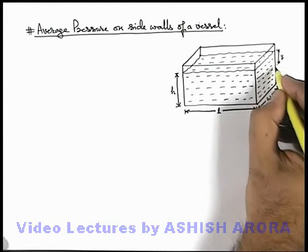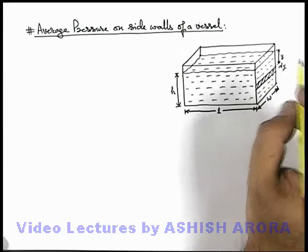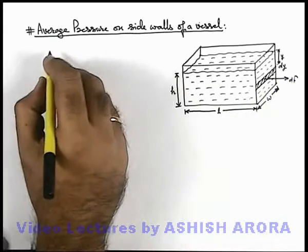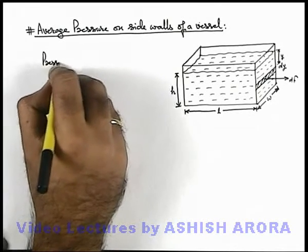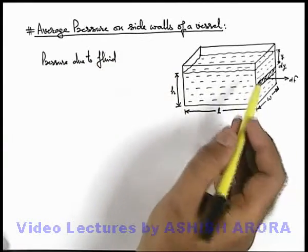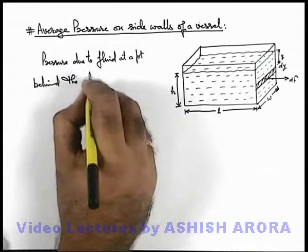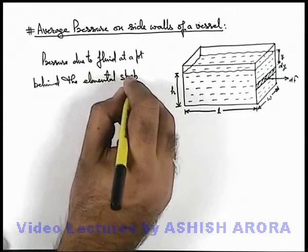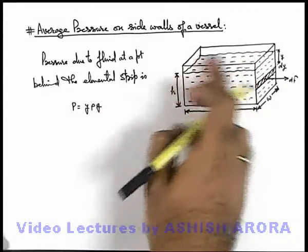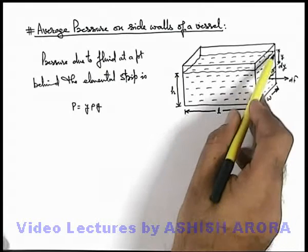We consider an elemental strip on the side wall of width dy. The liquid particles just behind this strip will push it in the outward direction with force dF. The pressure due to fluid at this point — we are talking about gauge pressure only, not atmospheric pressure — is y·ρ·g, since this point is at a depth y below the free surface.